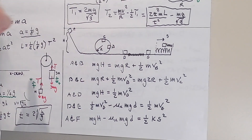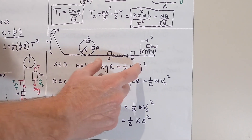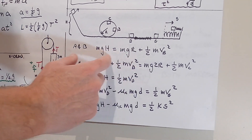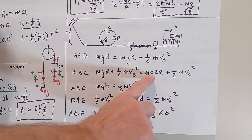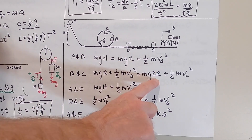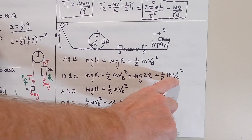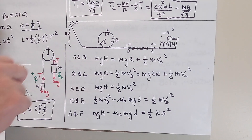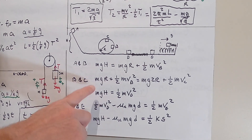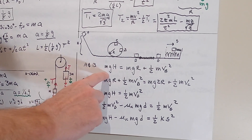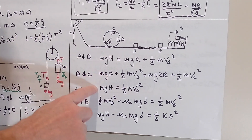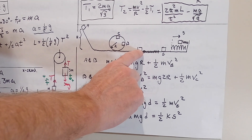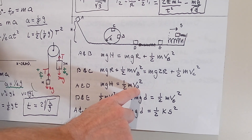Between B and C: the energy at B equals the energy at C. At C, the height is 2r instead of r, and the speed is v_C rather than v_B. Between A and D: starting from A with energy mgh, and at D it's back at the base level — all kinetic — so it's one half mv_D squared.